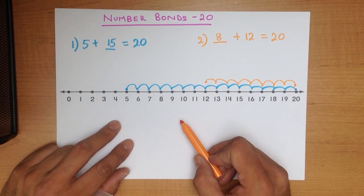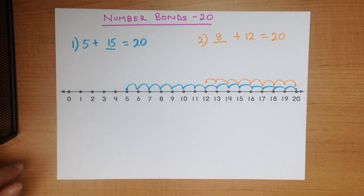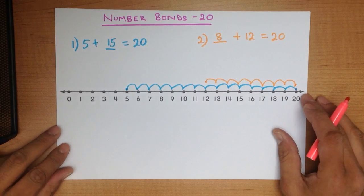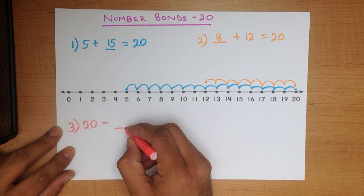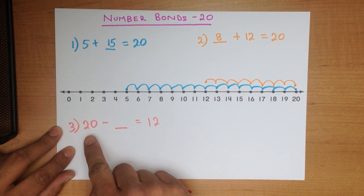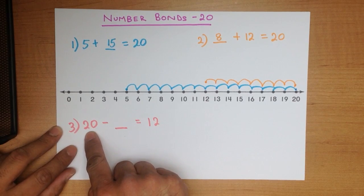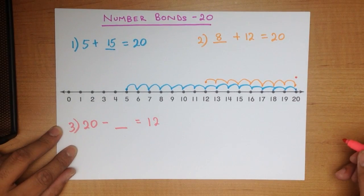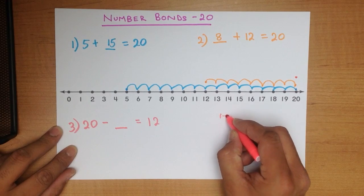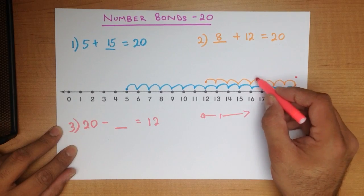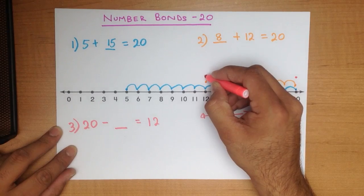Nice and easy, wasn't it? Now, can we use the number line for minus questions when we are doing number bonds to 20? Let's change colors. So what if you have 20 minus something equals 12? Now what we do here is we start at number 20. It's a minus question, so we look at the first number — it is 20. It's minus, so we are going backwards. Remember, if it's plus we go forward; if it's minus we go backwards. We are counting backwards. What number do we finish at? We put a dot at number 12.